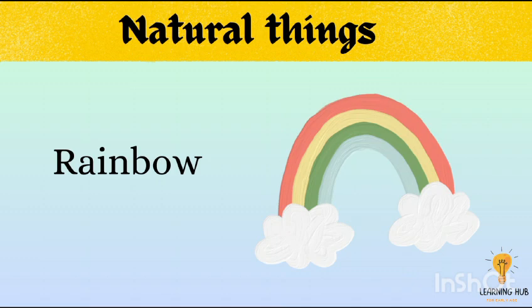After the rain, when the sun shines, we can see this beautiful rainbow. The rainbow has seven colors. Rainbow is a natural object.